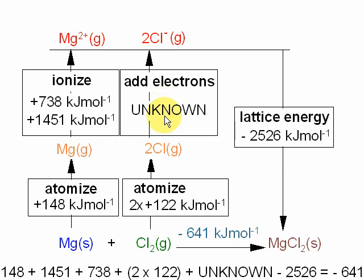Based on this scheme, we can work out what the unknown is, because the energy change going up these arrows and down that arrow is the same as the energy change going across here.